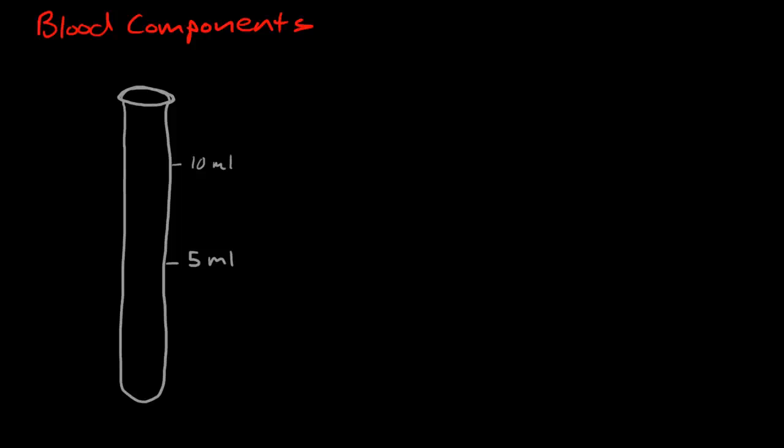Now that we've talked about the purpose of blood, I want to talk about the different components of blood. Here we have a test tube. If we fill it up with blood and spin it down in a centrifuge, we will separate out the major components of the blood.